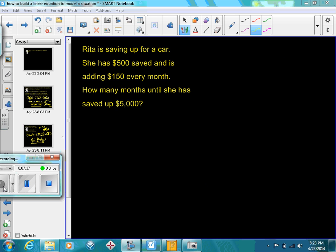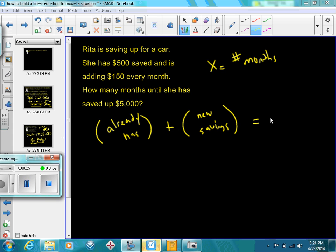This situation is a little different. Instead of it decreasing, it's going to be an amount increasing. Rita is saving up for a car. She's got $500 saved. She's going to put an extra $150 on top of that every single month. And the question is, how many months until she's saved $5,000? So x should equal the number of months that she's saving. Let's take a look at this. Here's the amount she already has, which would be $500, and she's going to add into the new savings that she's going to add on to it, and it's going to equal—those two amounts are going to combine. That's the reason we're saying it's adding. It's going to equal $5,000 because that's her goal.